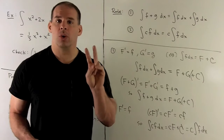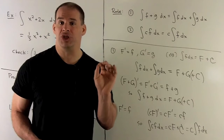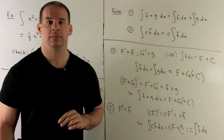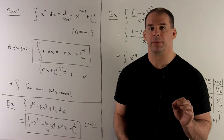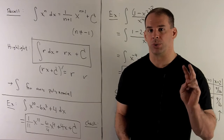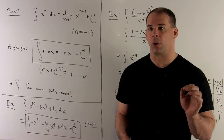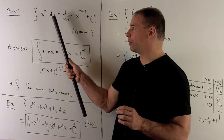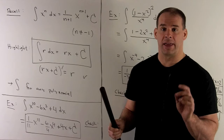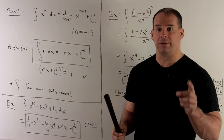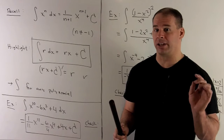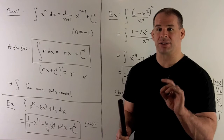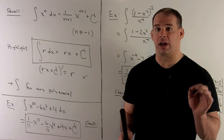So our two rules hold no matter what your f and g are, assuming everything makes sense. Taking our two rules together with the rule from before — the indefinite integral of x to the n with respect to x gives you the add-one, flip-it-over rule, as long as n is not equal to minus one — we start building a list of functions we can integrate.